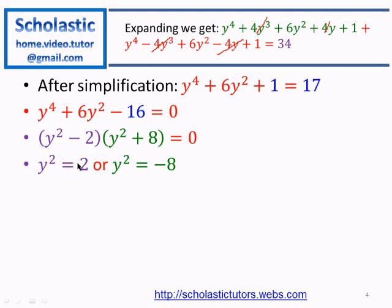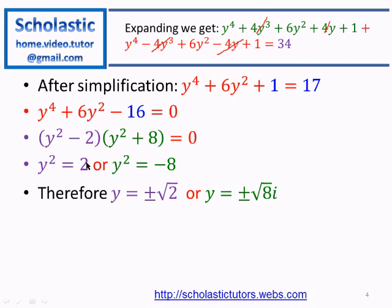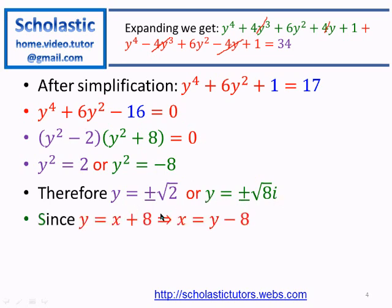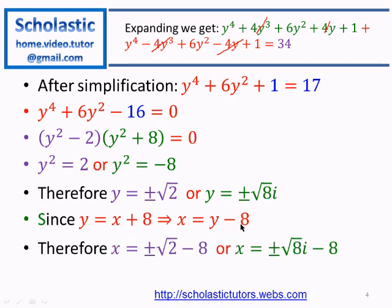From y² − 2 = 0, we get y² = 2, so y = ±√2. From y² + 8 = 0, we get y² = −8, so y = ±√8 · i, since √(−1) = i, which is a complex number. Now we resubstitute: since y = x + 8, we have x = y − 8. So x = ±√2 − 8, or x = ±√8·i − 8.